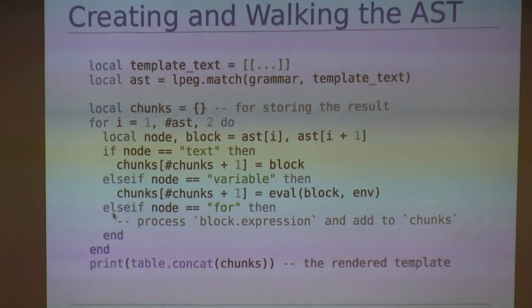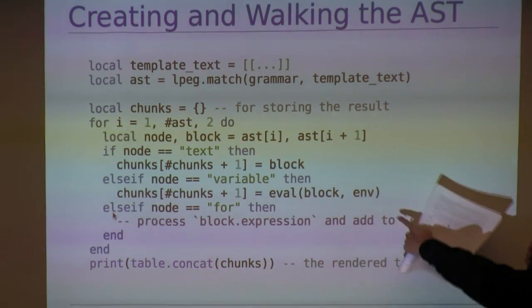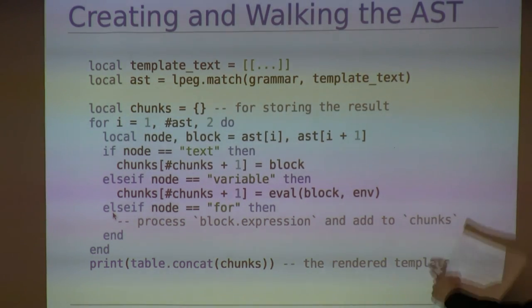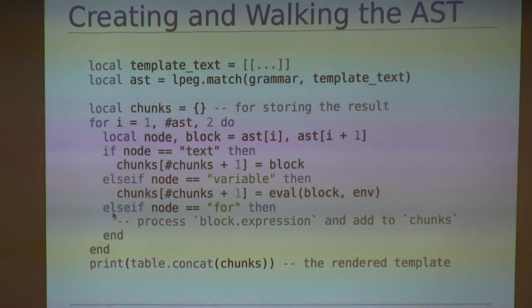I'm going to take a slight detour from LPEG and complete the picture of this template engine. After using LPEG to parse the template and produce an AST, we can iterate over it in two pairs in order to render the final template. Now, each node is processed in a certain way. Plain text nodes are just copied verbatim. Variable nodes are evaluated before their results are inserted. And for nodes are recursively evaluated. Their sub-ASTs are recursively evaluated, subject to their for expressions.